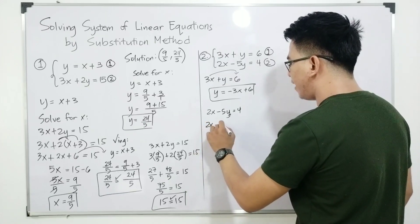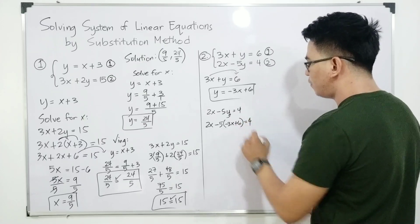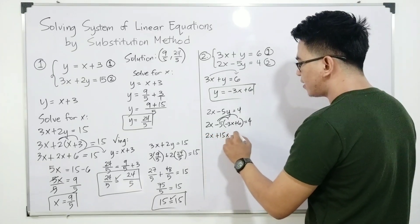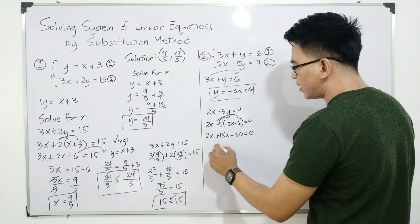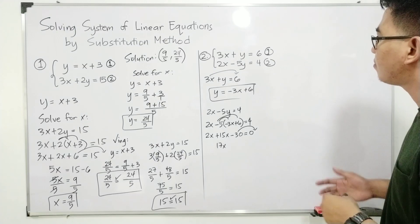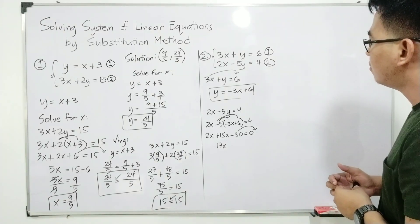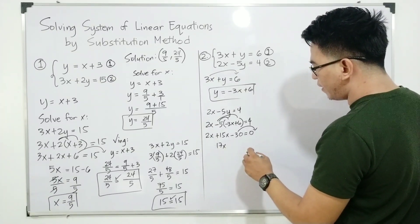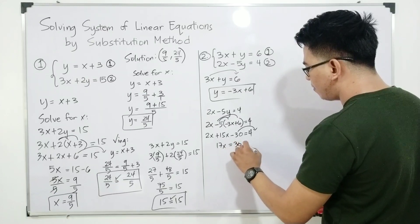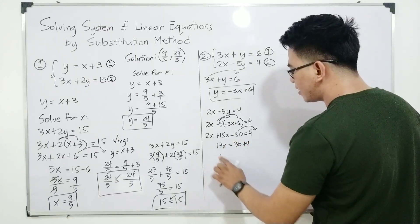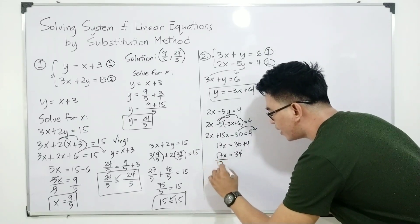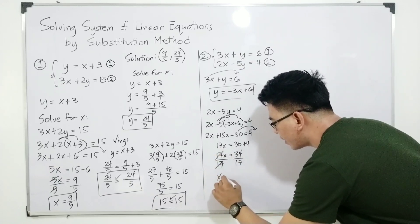Since I used equation number 1, I'll substitute this value into equation number 2: 2x − 5(−3x + 6) = 4. By the distributive property, this becomes 2x + 15x − 30 = 4. Combining like terms: 17x = 30 + 4 = 34. Dividing both sides by 17, your x = 2.